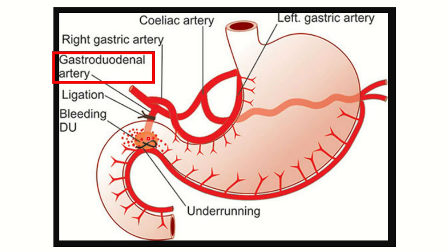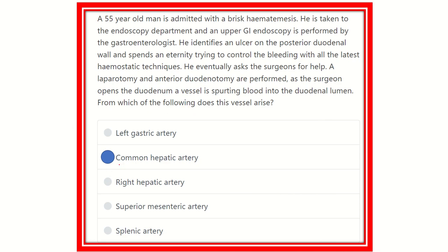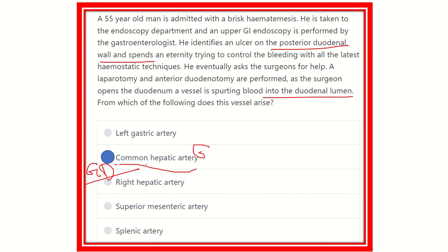This picture also shows that once the anterior wall is removed, bleeding occurs into the duodenal lumen from the gastroduodenal artery, which arises from the common hepatic artery. It is now clear: the common hepatic artery gives a branch — the gastroduodenal artery — and this gastroduodenal artery passes behind the posterior duodenal wall. Due to the posterior wall ulcer of the first part of the duodenum, erosion of the gastroduodenal artery occurs. The gastroduodenal artery arises from the common hepatic artery, so our answer is the common hepatic artery. Thank you.